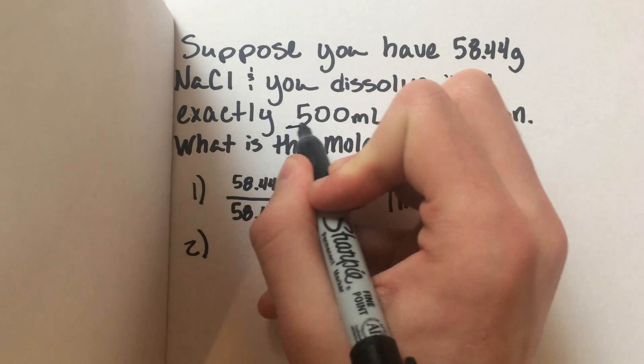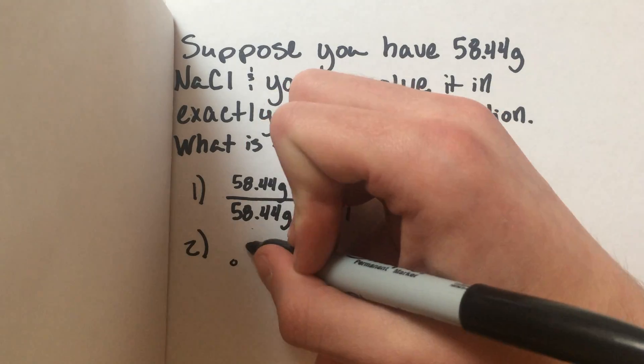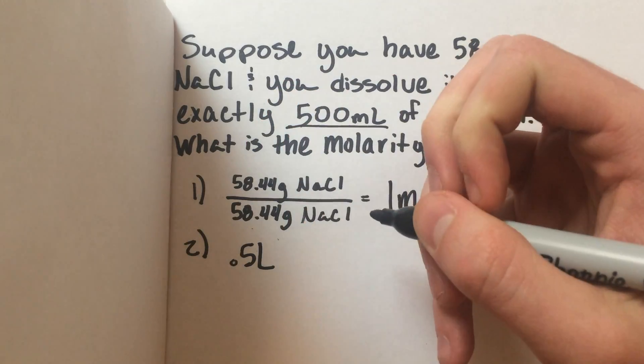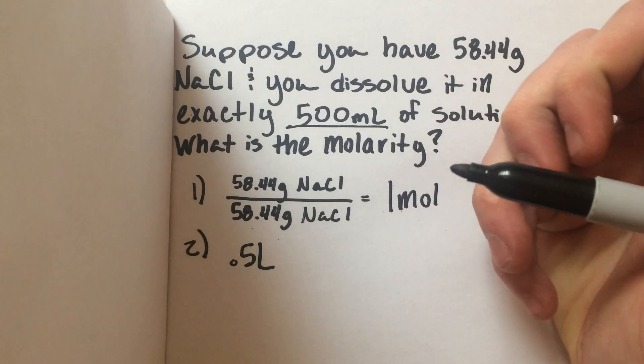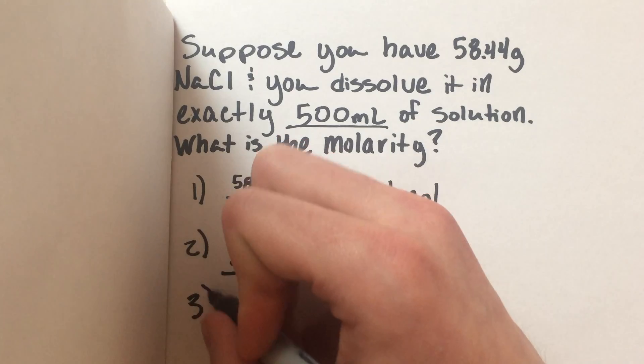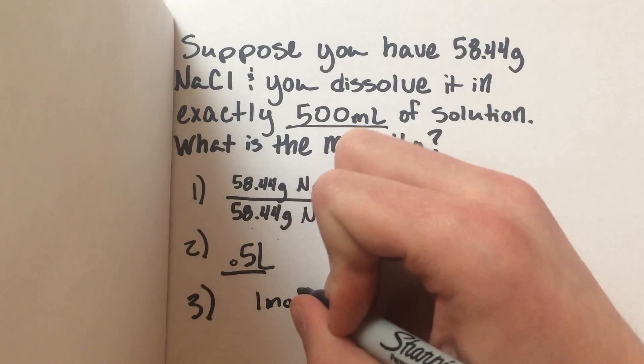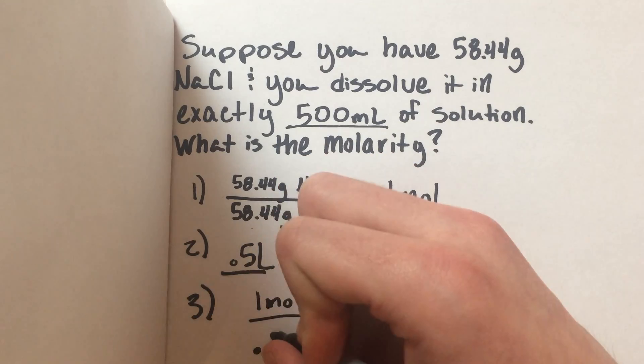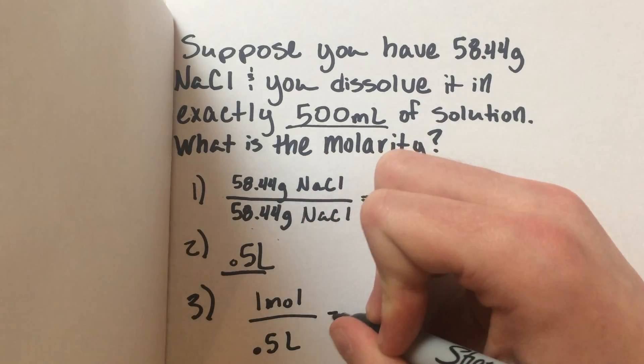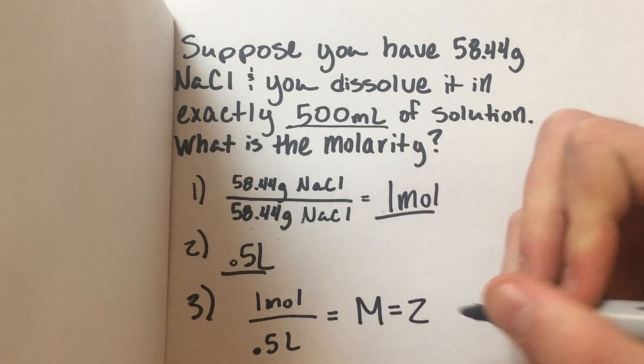Right here it says we have 500 milliliters, which you should know is 0.5 liters. Now that we have our moles and our liters, step three: divide. We're going to have one mole over 0.5 liters, which equals a molarity of two as well.